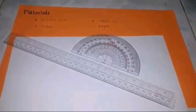The materials needed are protractor, ruler, and sheets of paper.